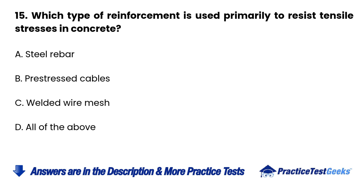Question 15. Which type of reinforcement is used primarily to resist tensile stresses in concrete? A. Steel rebar. B. Pre-stressed cables. C. Welded wire mesh. D. All of the above.